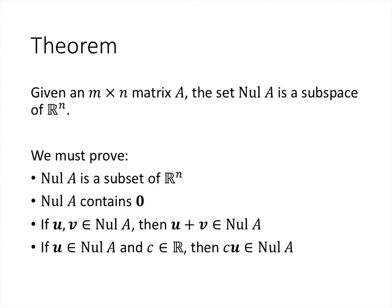We've been calling this the null space, but we haven't actually proved that it's really a subspace of R^n. Remembering what we talked about before, there are four things we have to prove: we have to show it is a subset, that it contains the 0 vector, and that it's closed under vector addition and scalar multiplication.